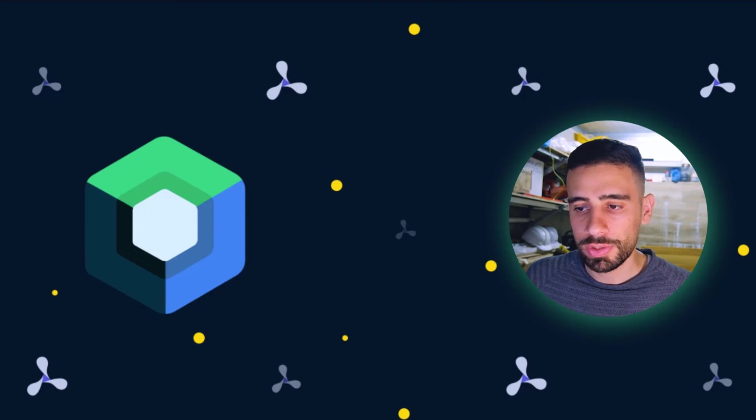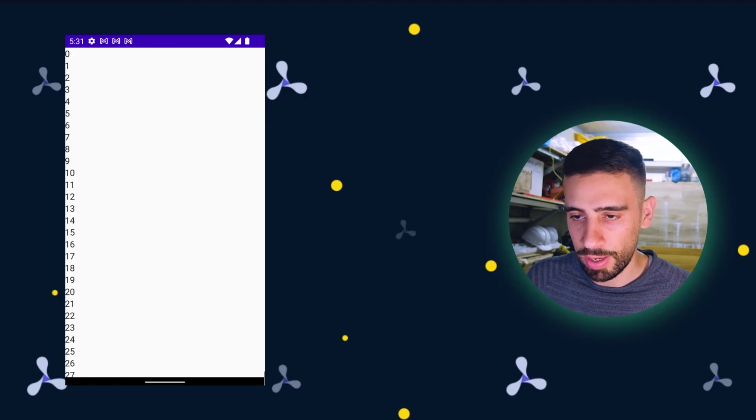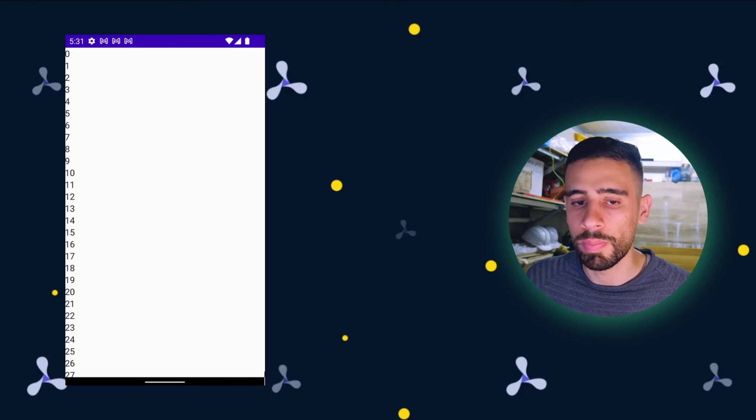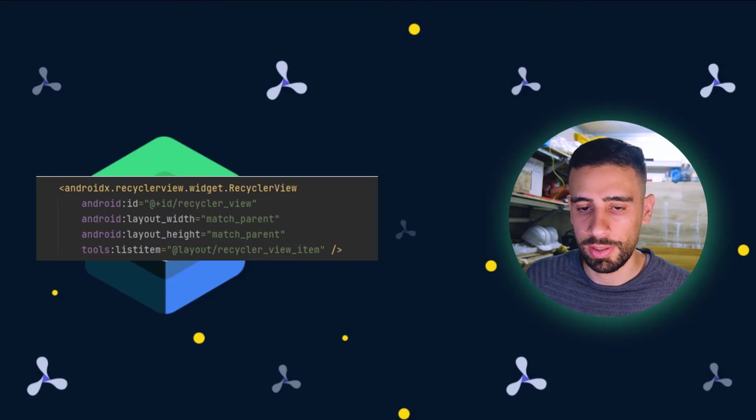We're just gonna compare the amount of code that we need to write to implement this list of names. As you could see it's just a list of names. We're just gonna write this in XML then write it in Compose. First thing I wrote this in XML. To build a list in XML you want to define a RecyclerView inside your design.